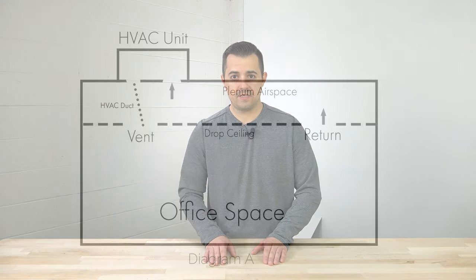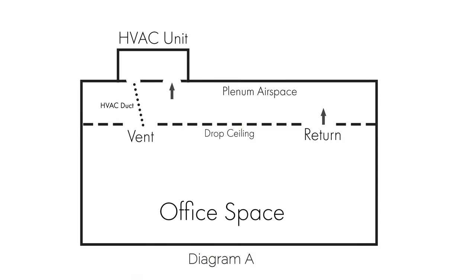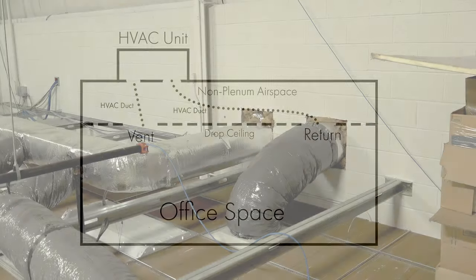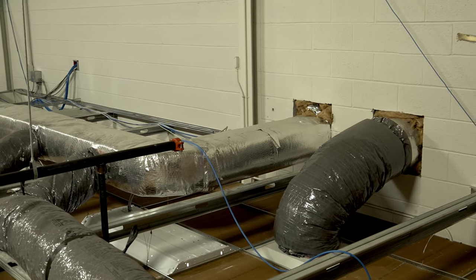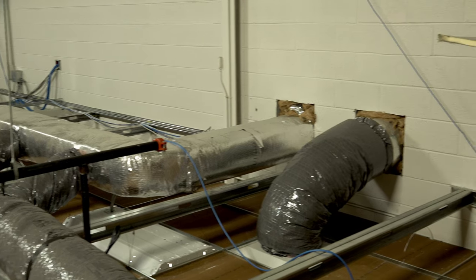A plenum refers to an airspace, usually above a drop ceiling or below a raised floor, that is used by HVAC systems for air circulation. Although not all spaces above a drop ceiling are plenum airspaces. In diagram A, the return for the HVAC system is directly above the drop ceiling — this would be a plenum airspace. In diagram B, this is not a plenum airspace because the return feeds directly into the HVAC system with ducting, so it feeds directly into there and is not a plenum airspace.